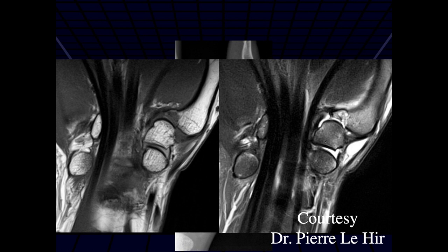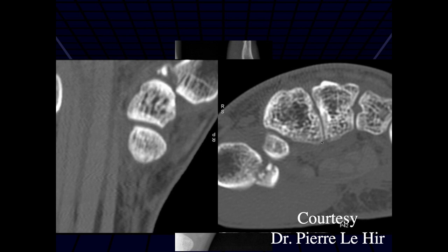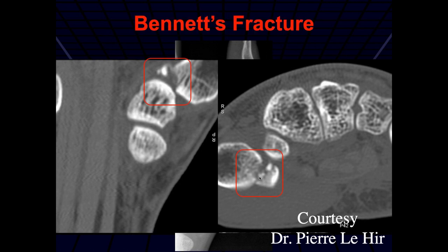Is this a Bennett fracture? Yes — you can see the fracture on CT. This is an unstable injury because it's at the capsular insertion of that oblique ligament.